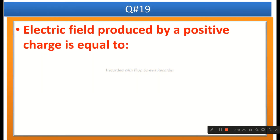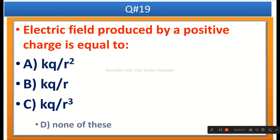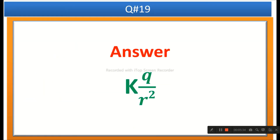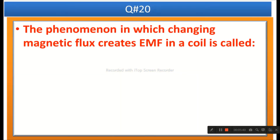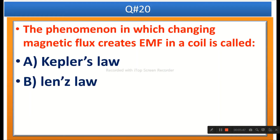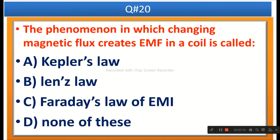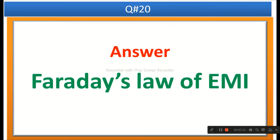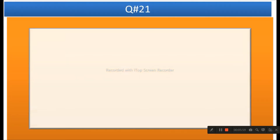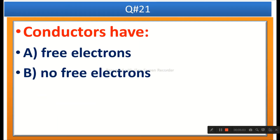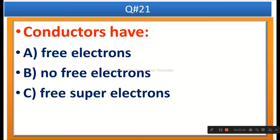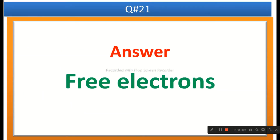The next question: The phenomenon in which changing magnetic flux creates EMF in a coil is called — options are Kepler's law, Lenz's law, Faraday's laws of electromagnetic induction, or none of these. The right answer is Faraday's law of electromagnetic induction. The next question: Conductors have — options are free electrons, no free electrons, free super electrons, or none of these. The right answer is free electrons.